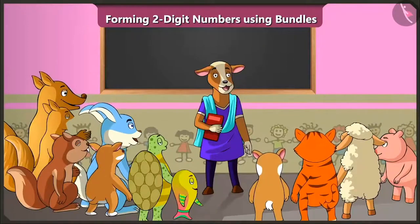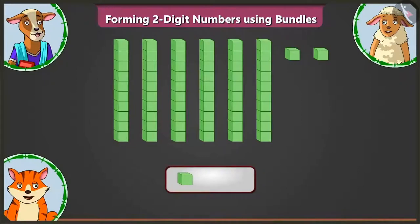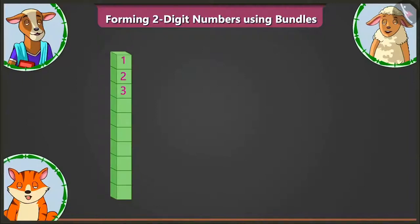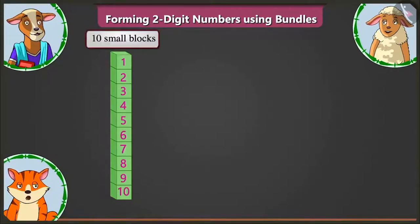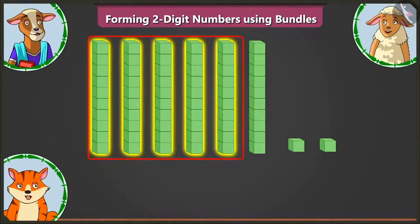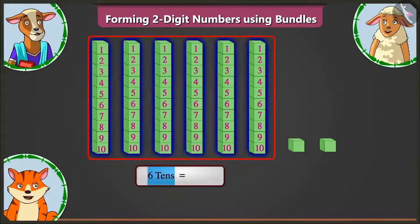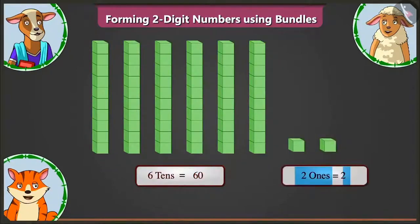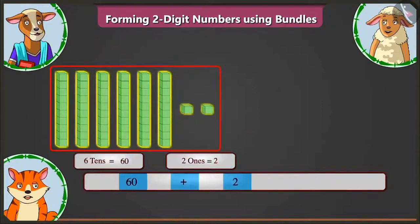Now let us look at the second example. Look, Billy, here we have to count one small block as one. Tell me, what number do all these blocks represent? In the first big block, there are one through ten small blocks — that means one tens. Similarly, there are six groups of ten blocks each. So six tens makes sixty. Now there are two small blocks, which means there are two ones. Adding two to sixty, here we have sixty and two — number sixty-two.